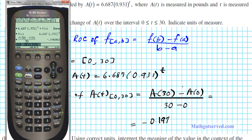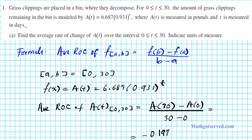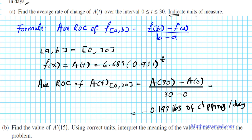We also have to indicate the units. The independent variable is time in days, and A is the amount of clippings in pounds. So the answer is negative 0.197 pounds of clippings per day.